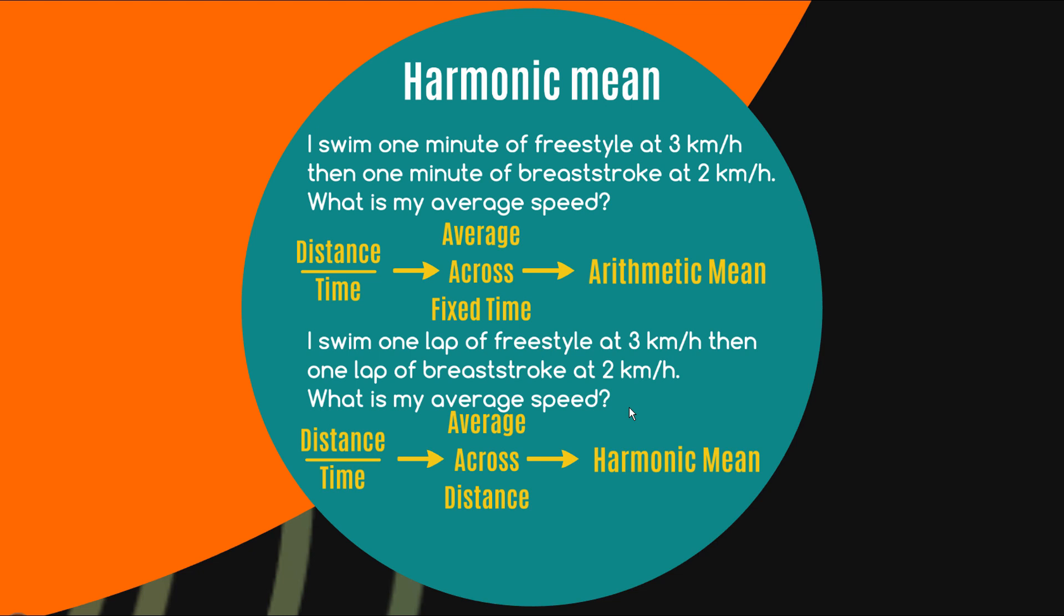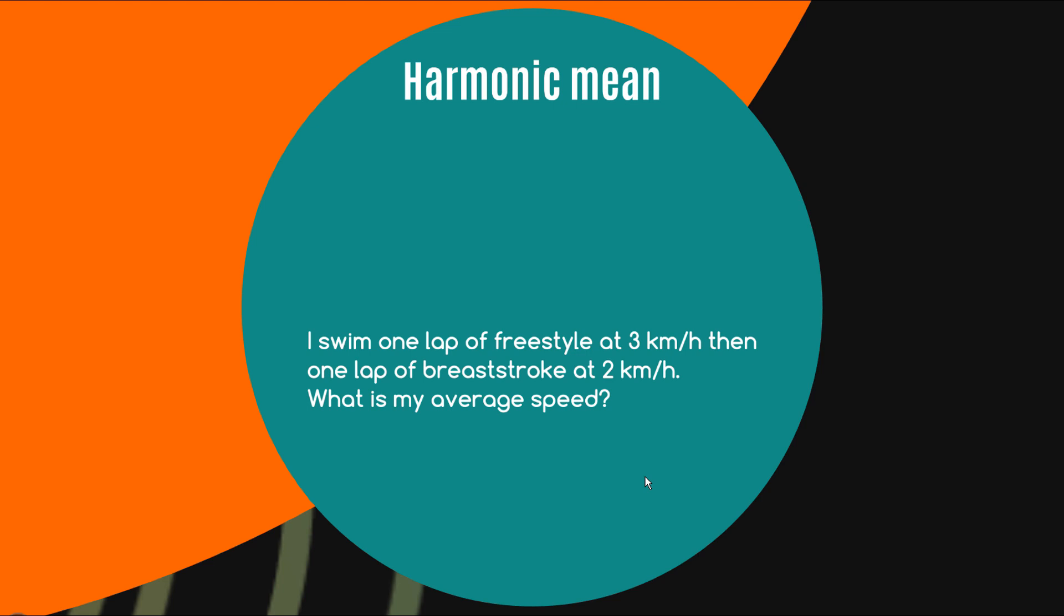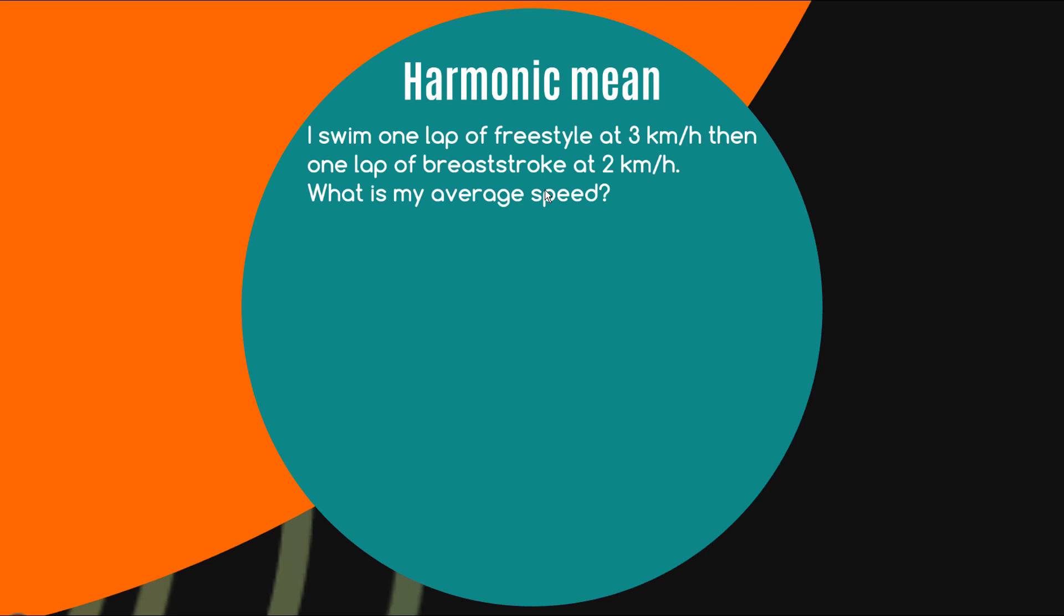So the average speed is no longer going to be just 2.5 kilometers it's going to have to be the harmonic mean of both two and three so whenever you have a rate like this distance over time if you're trying to find the average across a fixed distance which is the numerator of the rate the solution will be a harmonic mean so let's indeed find out how that gets calculated.